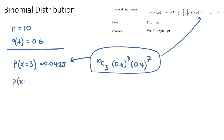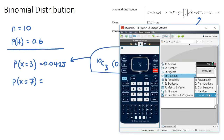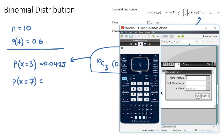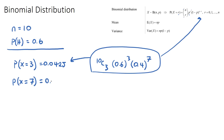If we said the probability that X equals seven, we can use our calculator again. Since the probability of a head is 0.6 and we have ten trials, getting seven heads is more likely than getting three. Going to Distributions → Binomial PDF with n=10, p=0.6, and x=7 gives us 0.215.